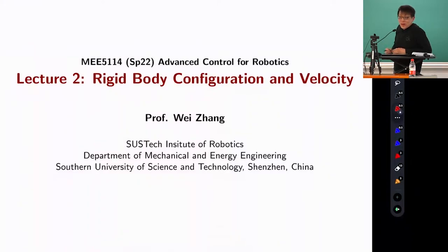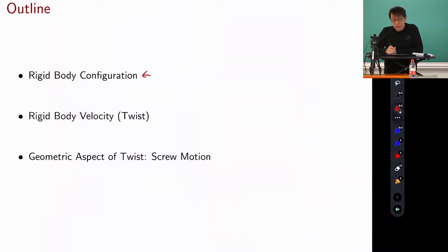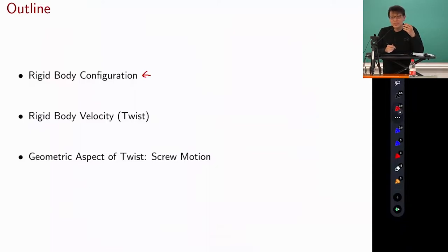Let's start our discussion on robot kinematics. Let's directly jump into this lecture. For an undergraduate class, you have definitely learned most of this. Do you know what robot configuration is? What's the rigid body configuration? How to represent the rigid body configuration? Orientation, displacement — configuration is the orientation class plus the displacement. Let's have a quick recall about rigid body configurations and how to represent them.